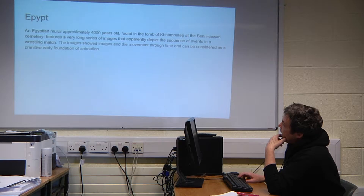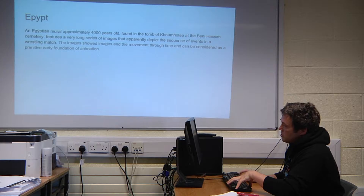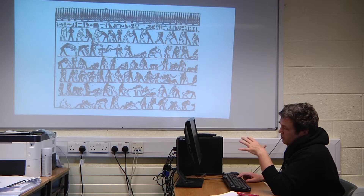Egypt is quite important in the development of animation. In the tomb at Beni Hassan, there are events depicting a wrestling match — it depicts movement over time. It's a primitive form of animation, and if the images were put together, you'd have a very realistic animation.